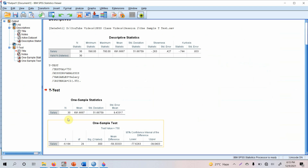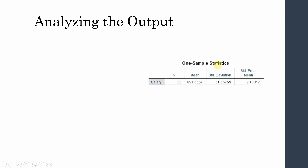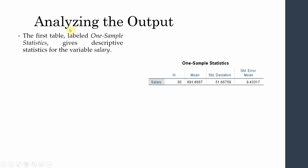Analyzing the output: the first table, One Sample Statistics, gives descriptive information about the test variable salary — the sample size is 30, the mean value is 691, which is less than the claimed 750,000. The table also shows the standard deviation and standard error.